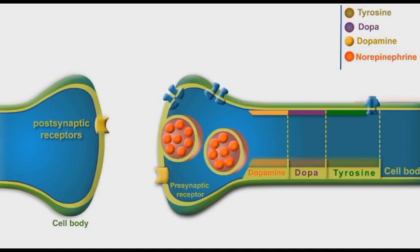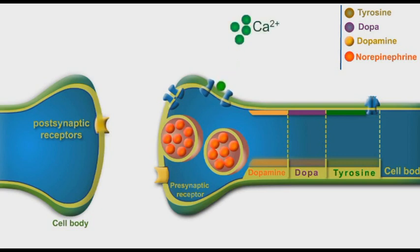Depolarization of a neuronal cell membrane opens the voltage-gated calcium channels, which allow the influx of calcium ions into the neuronal cytoplasm, where they stimulate the release of norepinephrine molecules into the synaptic clefts.